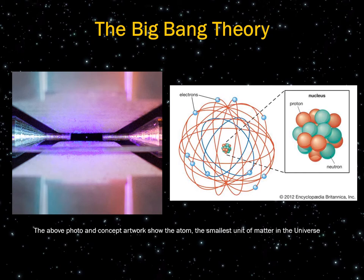On this slide, we have a diagram of an atom on the right, and in the center, we have the nucleus of the atom, which contains protons and neutrons. Orbiting the outside of this, we have very small electronegatively charged particles called electrons. The image on the left is a photograph of an atom.